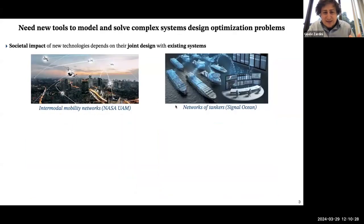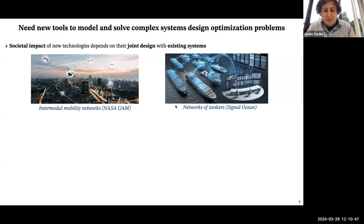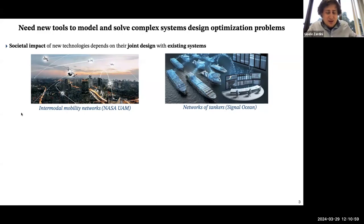The bottom line for all of these systems is that we typically deploy and develop these technologies by thinking about them in a controlled environment. But the real key societal impact will happen if we design the technologies together with the environment we will be deploying in. If you think about a mobility system, as Jinghua said, one thing is developing autonomous vehicle technology in the lab. Another thing is to integrate it within existing mobility systems.